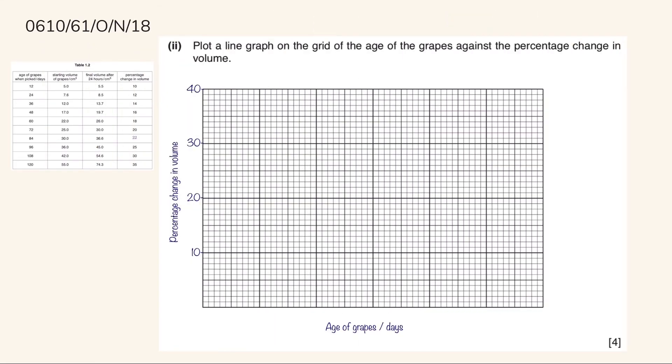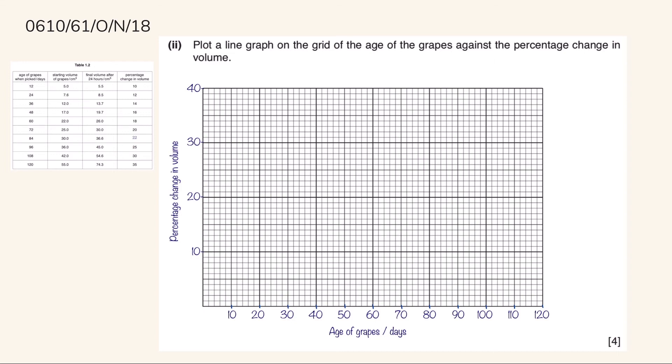Now, let's plot the line graph in Part 2. We put the labels, percentage change in volume in the y-axis and age of grapes in the x-axis. And in the y-axis, the value labels are that each 10 squares will equal to 10%, but in the x-axis, each 5 boxes will be equal to 10 days. So first, let's add the first point, which is located here.